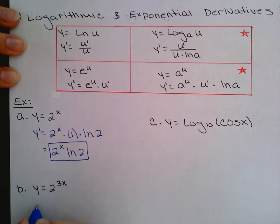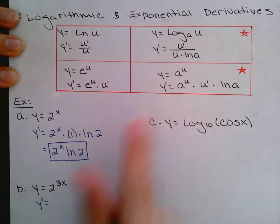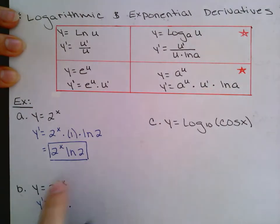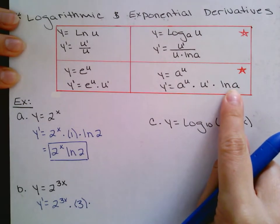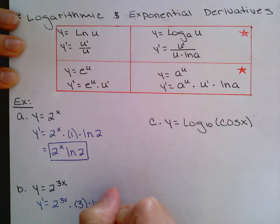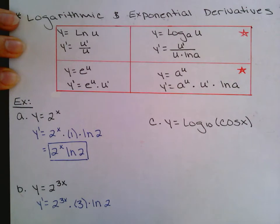In example b, I again have a number in the base — this is another a to the u rule. Step one is rewrite, then derivative of the exponent. The derivative of 3x is just 3, then times ln of the base. The base here is 2, so we get 3 times 2 to the 3x times ln of 2. There's not really much you can do to clean this up further, so feel free to leave it just like that.